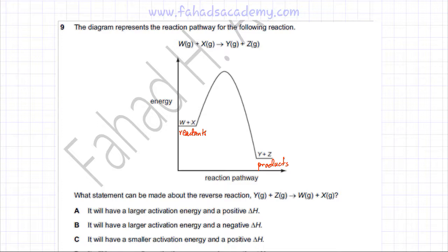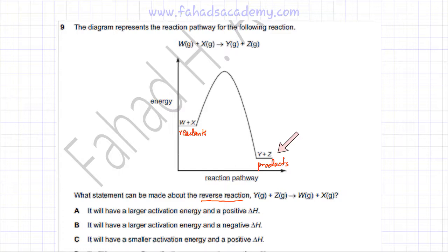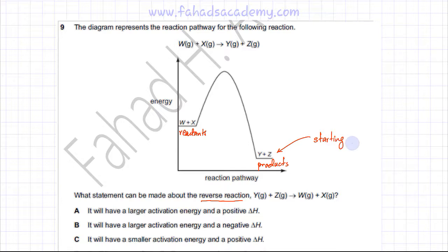The question asks which statement can be made about the reverse reaction. The reverse reaction means going in the backward direction — starting from the products and going back to the reactants. So in the reverse reaction, Y and Z are the starting point, i.e., the reactants.